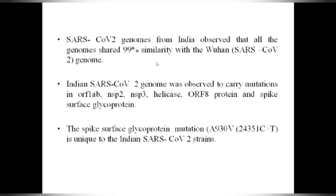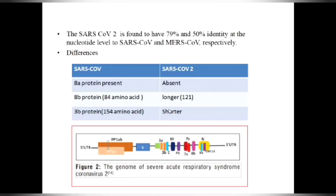SARS-CoV-2 genomes from India show 99% similarity with Wuhan SARS-CoV-2 genomes. The Indian SARS-CoV-2 genome was observed to carry mutations in ORF1AB, non-structural protein 2, non-structural protein 3, helicase, ORF8 protein, and spike surface glycoprotein. The spike surface glycoprotein mutation is mostly the A930V mutation — where adenine is replaced by valine at position 930 — and this is unique to Indian SARS-CoV-2.